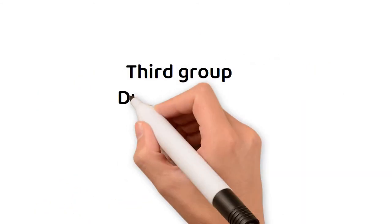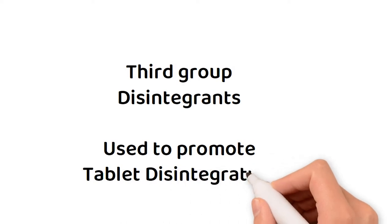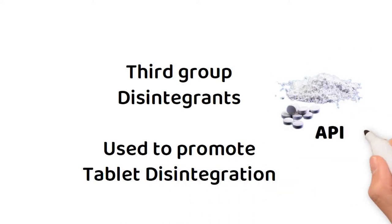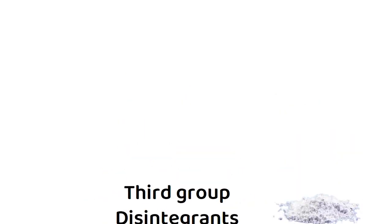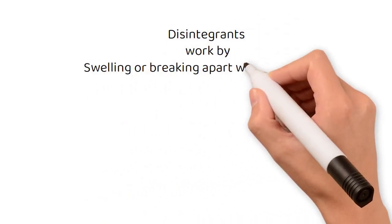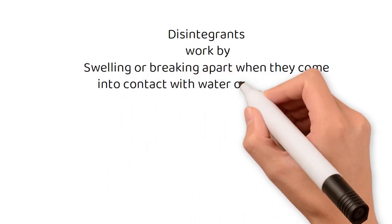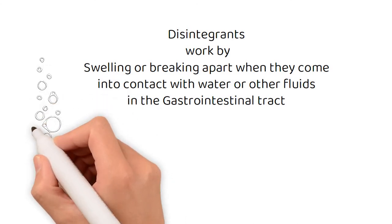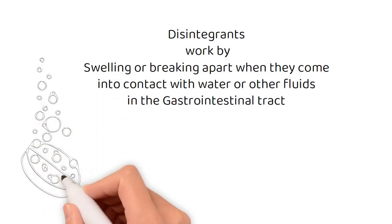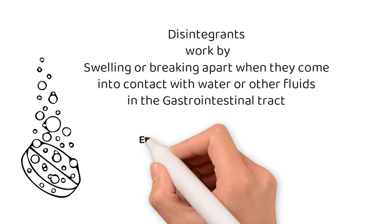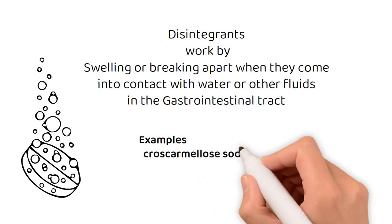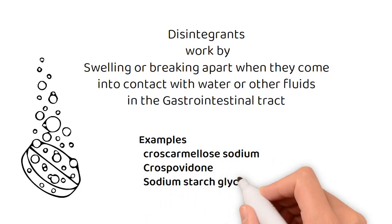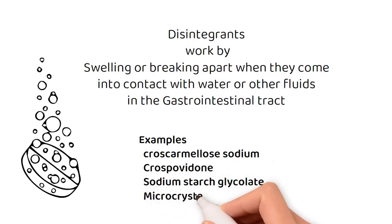The third group is disintegrants, which are used to promote tablet disintegration after administration so that the API can be released for absorption into the body. Disintegrants work by swelling or breaking apart when they come into contact with water or other fluids in the gastrointestinal tract, helping to break up the tablet into smaller particles that can be more easily absorbed. Examples of disintegrants include croscarmellose sodium, crospovidone, sodium starch glycolate, and microcrystalline cellulose.